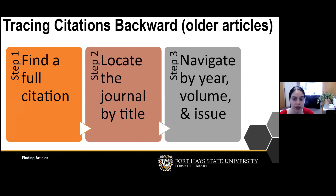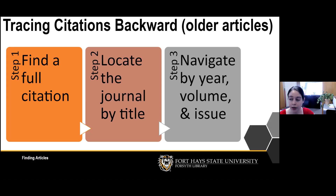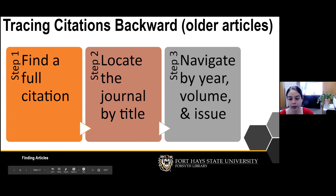There are two directions to trace citations. The first is tracing backward — finding older articles that your current article has cited. There are three steps: first, find a full citation if you only have an abbreviated or in-text citation; second, locate the journal by title and determine whether we have access through Forsyth Library or whether you'll need to request it via interlibrary loan; and third, navigate to the specific article within that journal by year, volume, and issue number.